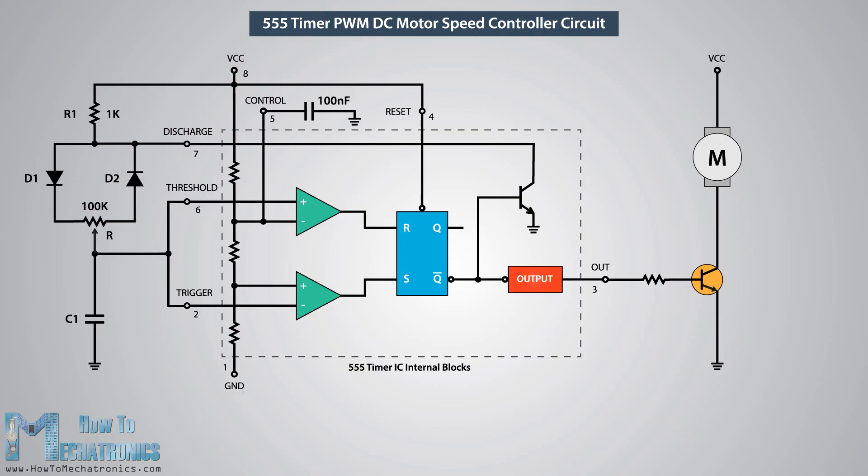In this example I used a Darlington transistor which can handle a current up to 5A. The output of the IC needs to be connected to the base of the transistor through a resistor, and in my case I used a 1K resistor.